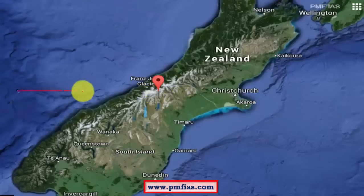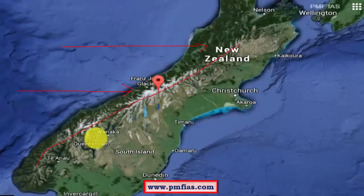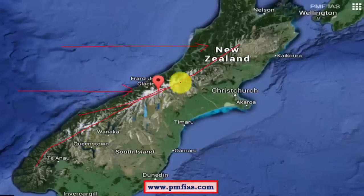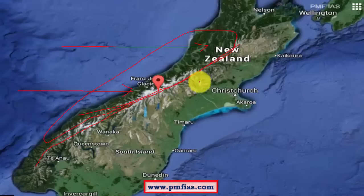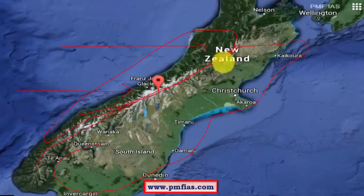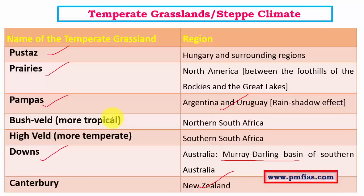In New Zealand, westerlies flow across the region. The Southern Alps of New Zealand — especially on the South Island — intercept most rain-bearing winds on the western windward side, causing good rainfall there. On the leeward side, the katabatic dry wind results in no rainfall, leaving the region semi-arid or steppe-type grassland, which is given the name Canterbury. So we have seen Pustas, Prairies, Pampas, Downs, and Canterbury — different regional names for the steppe type of climatic condition.